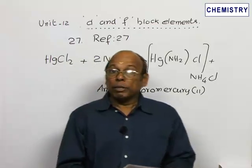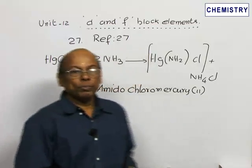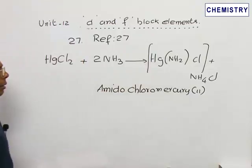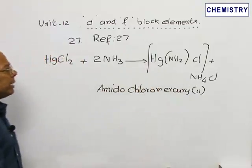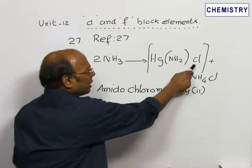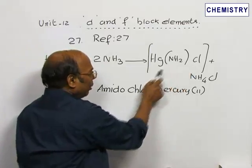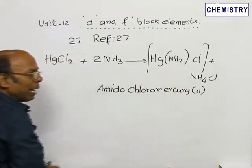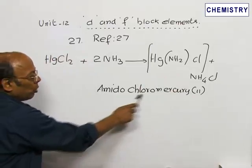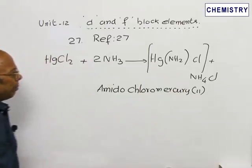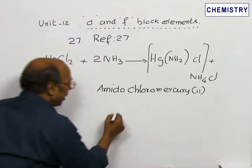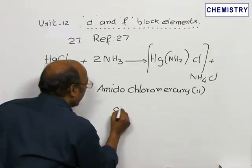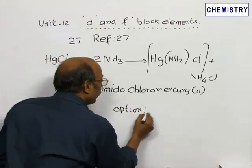The question deals with mercury(II) chloride, HgCl₂. It reacts with ammonia to give ammonium chloride and Hg(NH₂)Cl. The chlorine-containing product has an amino group, so its IUPAC name is amido chloro mercury. The product formula is Hg(NH₂)Cl, which coincides with option 4.